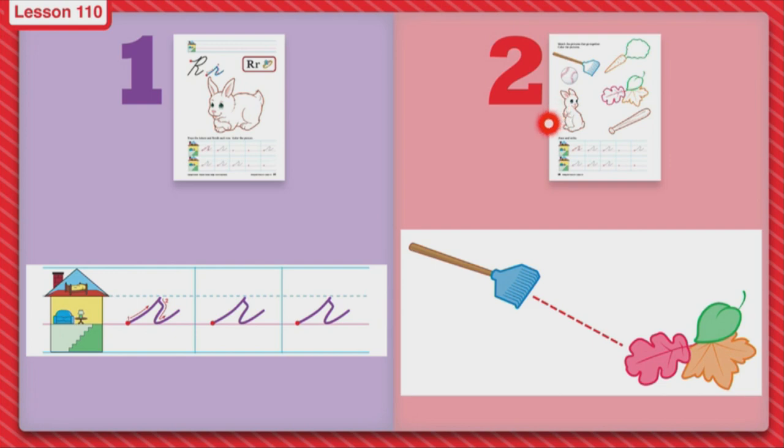And when you're done, then you can color all those pictures. Do a good job today. Color inside the lines. When you're done, go down to the houses, grab your pencil again, and then you can finish the rows of little Rs. I know you're going to do a great job today.